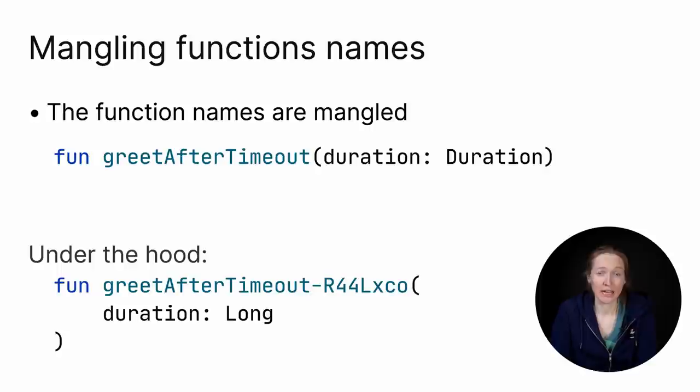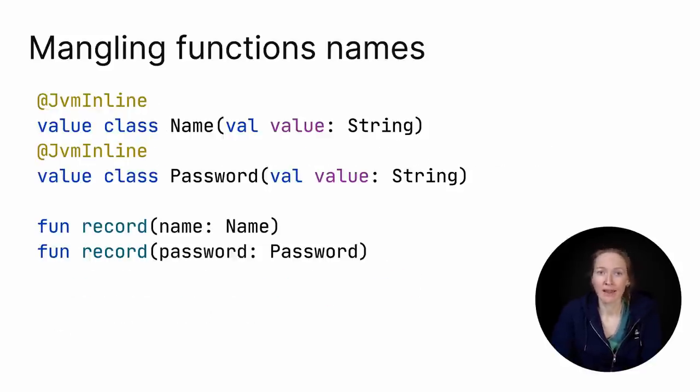If a function takes an inline class as a parameter, its name is mangled. That means the compiler adds a suffix to its initial name, like for greet after timeout in this example. That happens for two reasons. First, that allows overloading function to take two different inline value classes that wrap the same value.